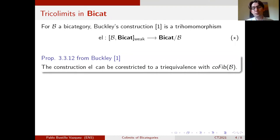So Buckley's results, the main result from Buckley, says that this construction is actually an embedding. And so another way to say that is that you can corestrict it to a triequivalence if you pick cofib as the codomain. So cofib here would be the tricategory of cofibrations.